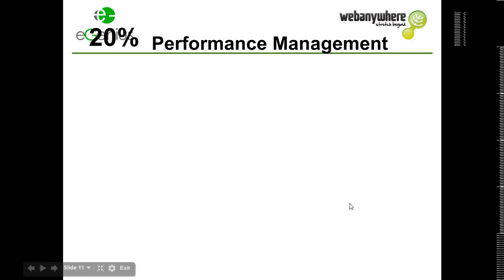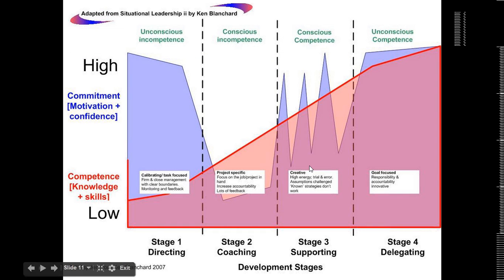What I want to talk about now is how we might look at what happens within the 20% in terms of performance management. I want to introduce this graph, which I devised after reading Situational Leadership by Ken Blanchard — a very well-known and well-respected book. What I want to use it for is to explain the way that the relationship between a manager and an employee needs to be developed so that the employee develops well through this process.